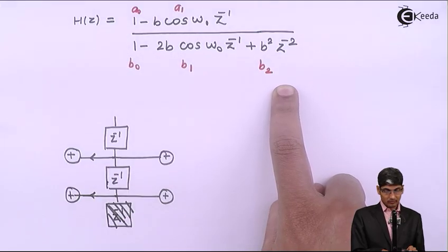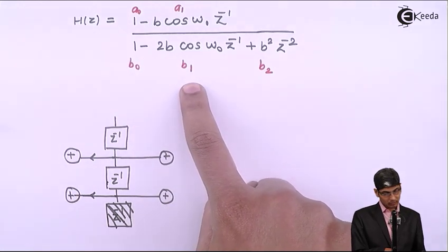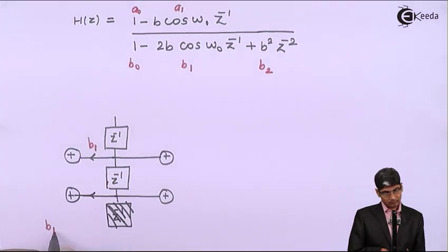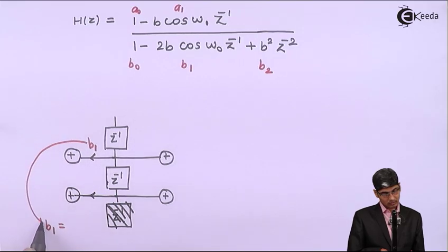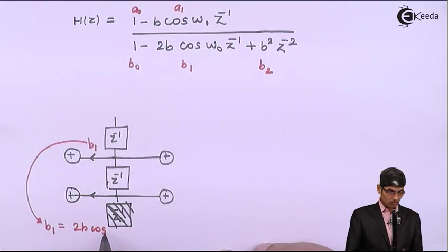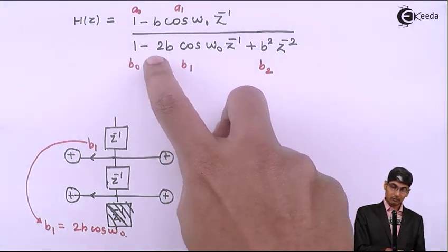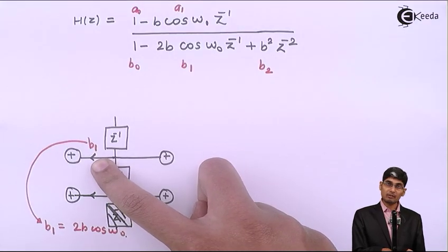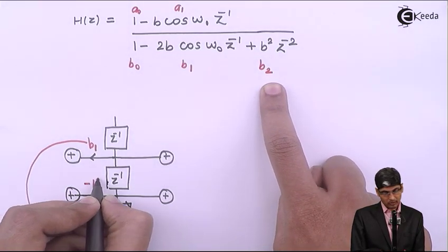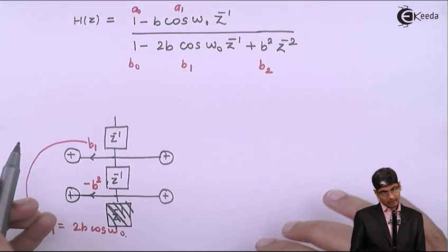Because there is a minus term associated with B₁ in the equation, when I write it on the diagram I flip the sign, so it becomes plus 2b·cos(ω₀). For B₂, the sign in the equation is plus b², so when I flip the sign I write minus b². I then connect both feedback terms to the adder at the input side.